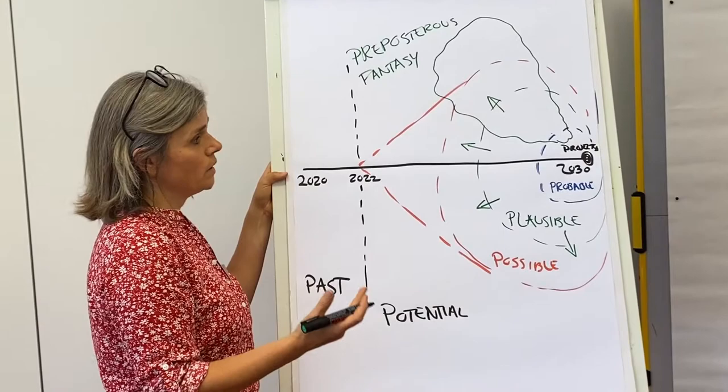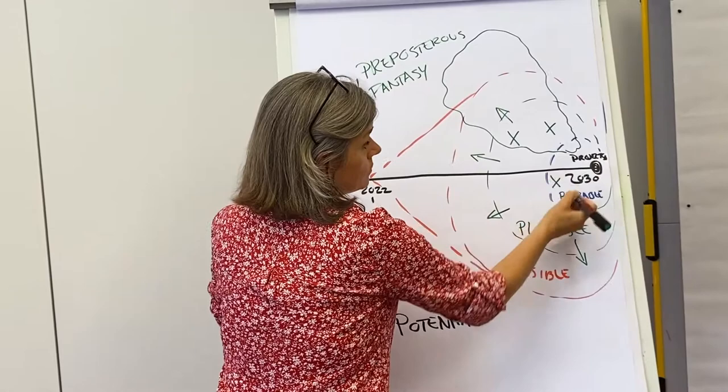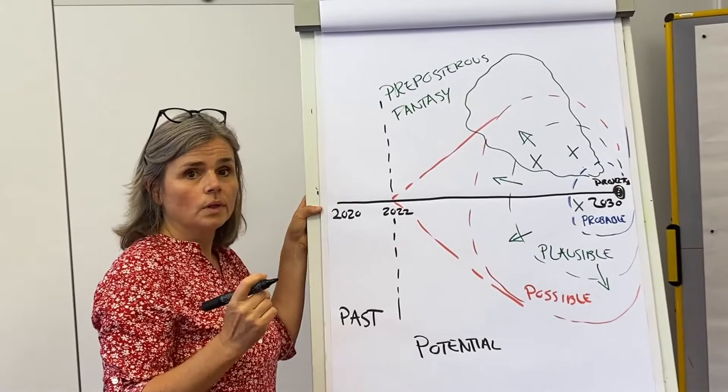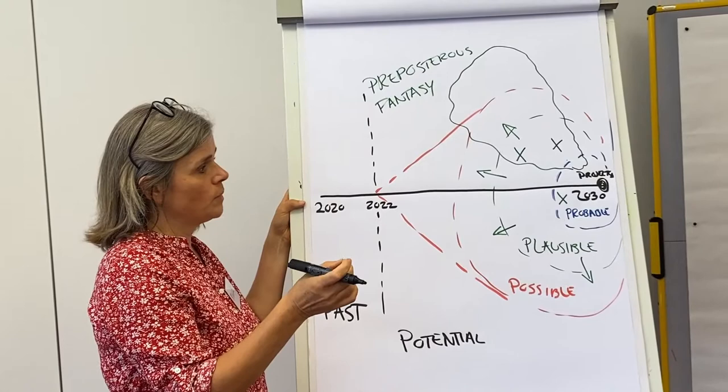And when we decide together as a scenario team what scenarios to share, some of those scenarios may be in the desirable, in the space of the desirable. Some of them may be, or one of them may be in the space of the probable as well. Sometimes you want to tell what you might call a status quo scenario. You want to actually show what is likely to happen if major things don't change.